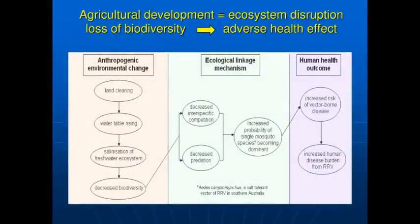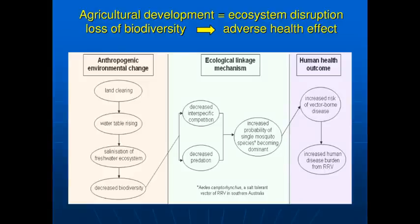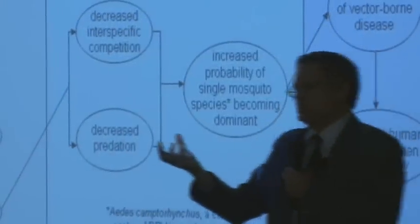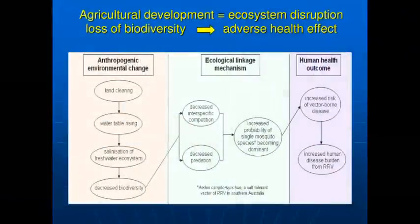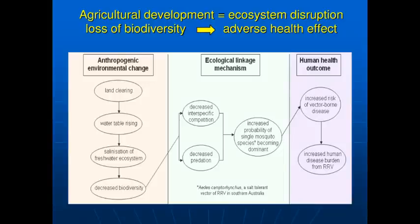The schema is: land clearing → water table rising → salinisation of the freshwater ecosystem → decreasing biodiversity, because many animals can't cope with the salt. When biodiversity is reduced, two specific functional groups are lost: competitors, so mosquito larvae have fewer aquatic organisms competing for food in the same puddle, meaning mosquitoes do better; and predators, so mosquito larvae lose predators and more mosquitoes survive. This increases the probability of a single mosquito species becoming dominant. If that species happens to be a vector of human disease — like Aedes camptorhynchus, a salt-tolerant vector of Ross River virus — you get increased vector-borne disease and human disease burden.